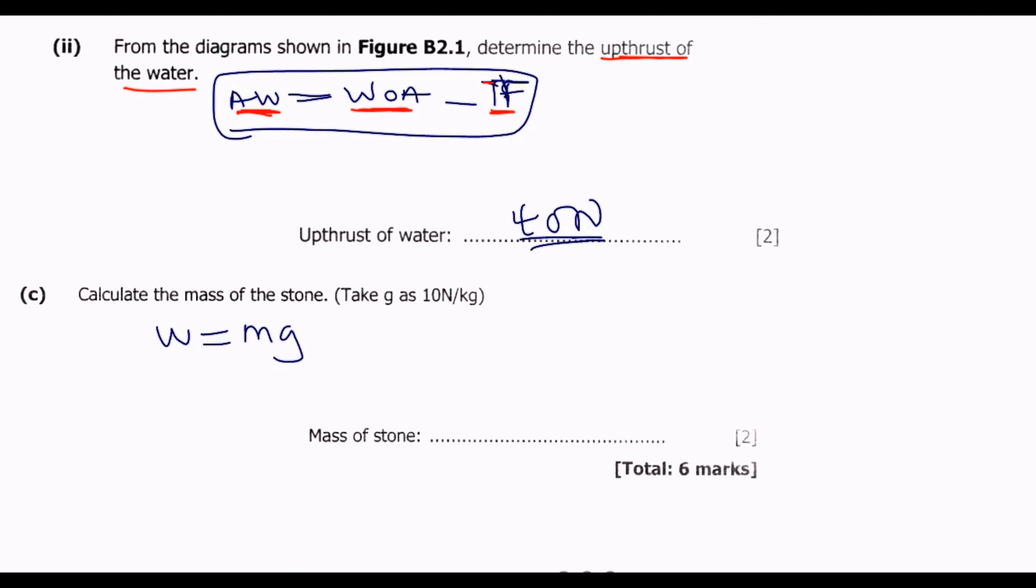We divide by G, so mass equals weight divided by gravity. So weight equals 60 Newtons, then we divide by gravity which is 10 Newton per kilogram. You notice that this and that cancels, then that into that is 6.